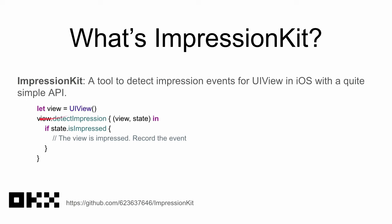ImpressionKit is a tool to detect impression events for UIView in iOS with a quite simple API. For example, you have a view and call the `detectImpression` API. When the impression event is triggered, you will get the callback.